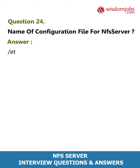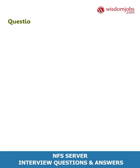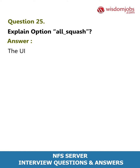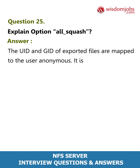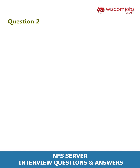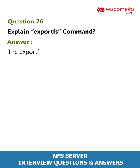Question 24: What is the name of the configuration file for NFS server? Answer: /etc/exports. Question 25: Explain the all_squash option. Answer: The UID and GID of exported files are mapped to the user anonymous. It is good for public directories.